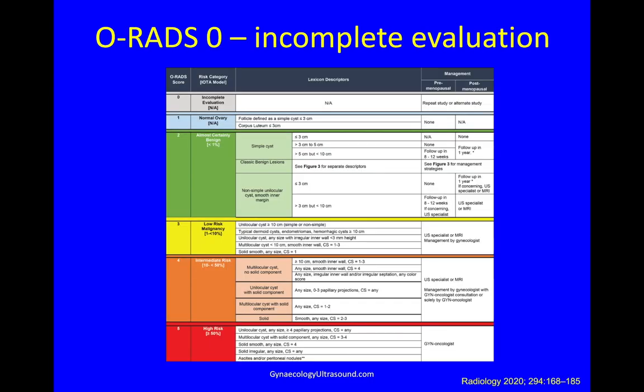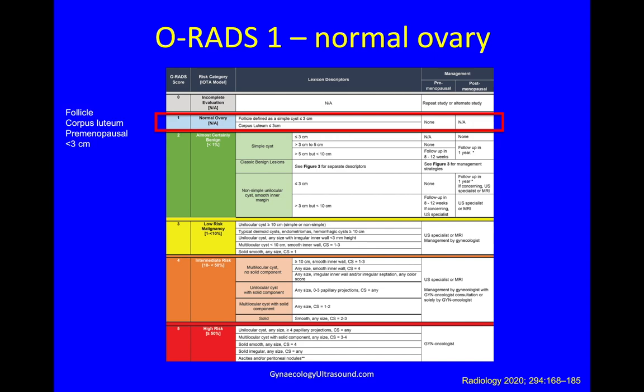ORADS 0 is an incomplete evaluation — perhaps due to bowel gas, a large lesion, or inability to do transvaginal imaging — meaning you need to repeat the study or do something different. ORADS 1 is a normal ovary, including a follicle, corpus luteum, or cysts in premenopausal women less than 3 cm. Importantly, don't call these a cyst, because for a patient a cyst sounds abnormal. Call it a normal ovary.